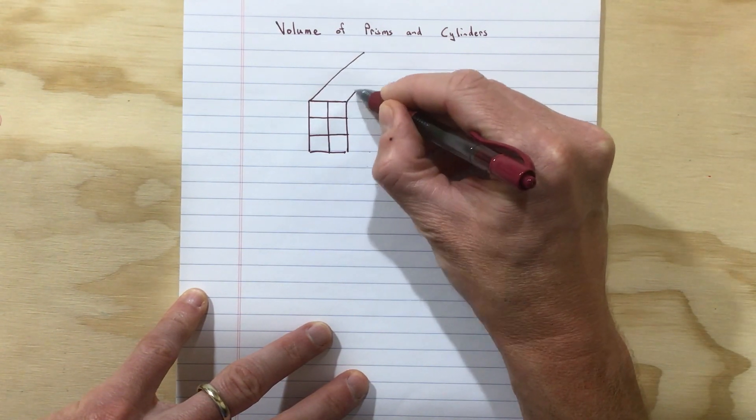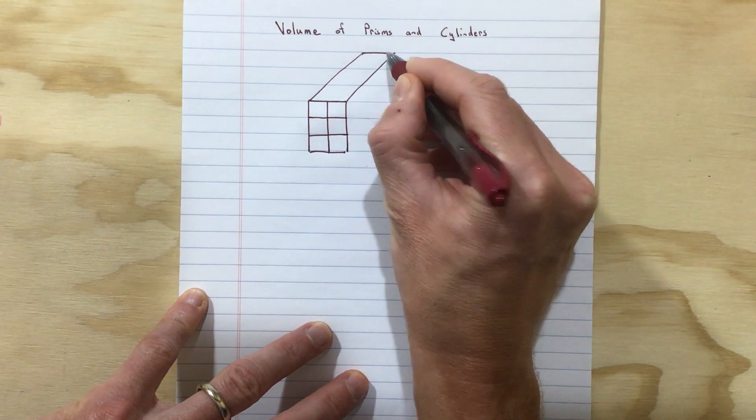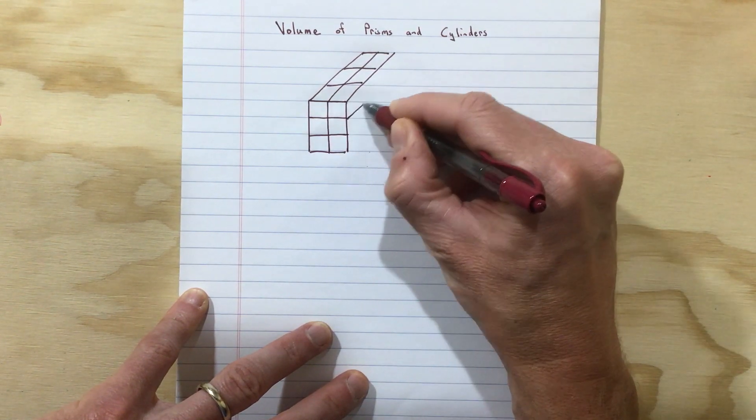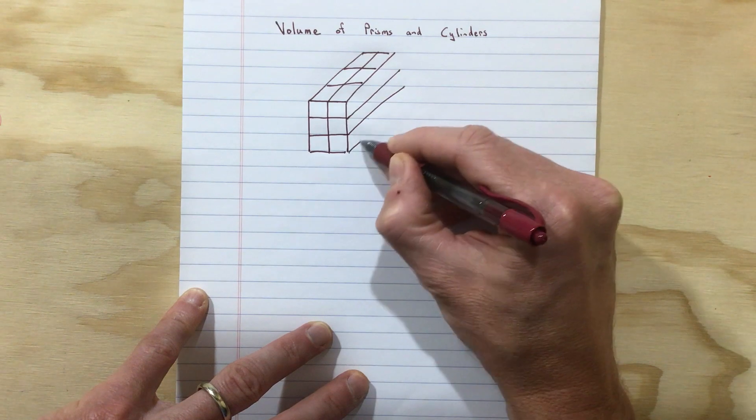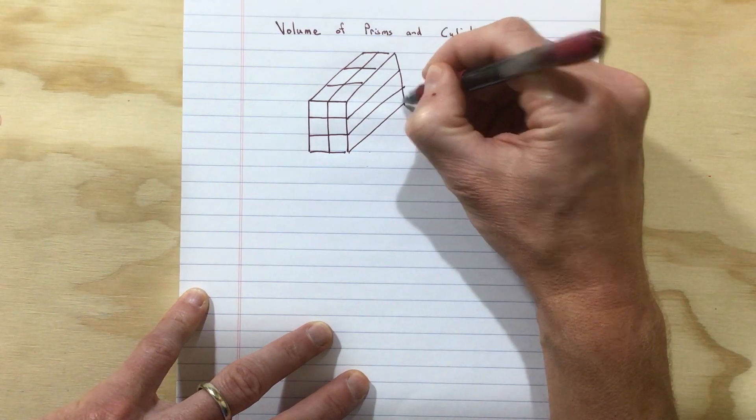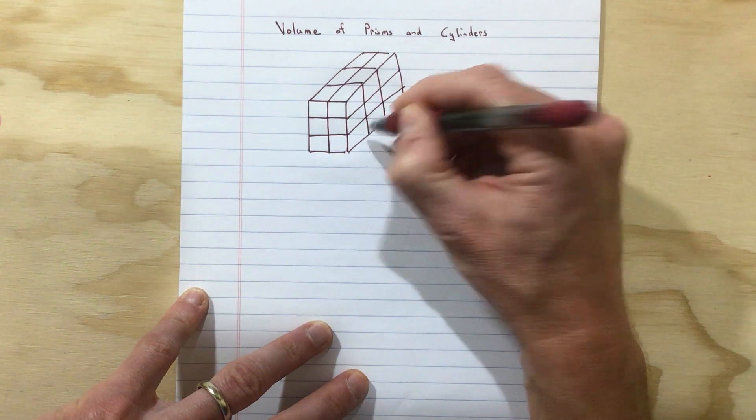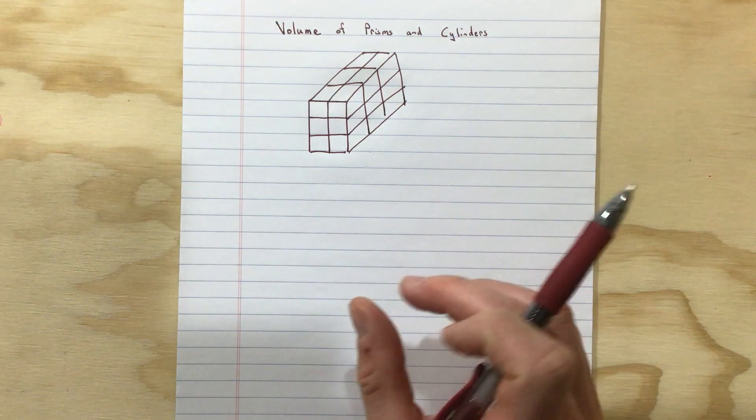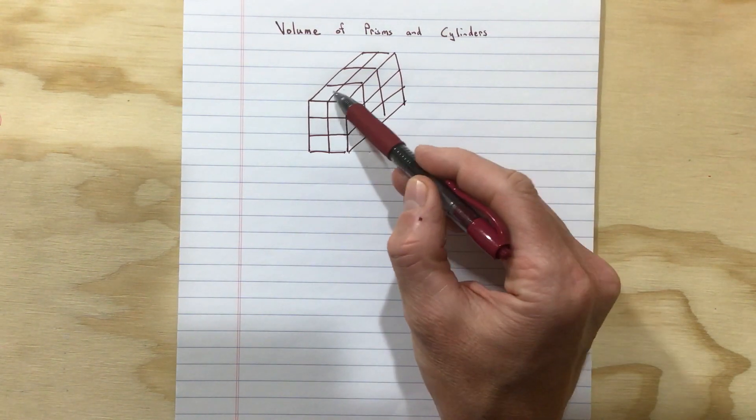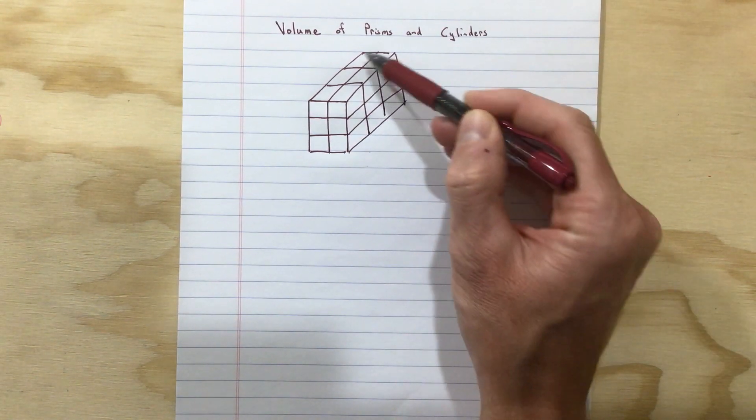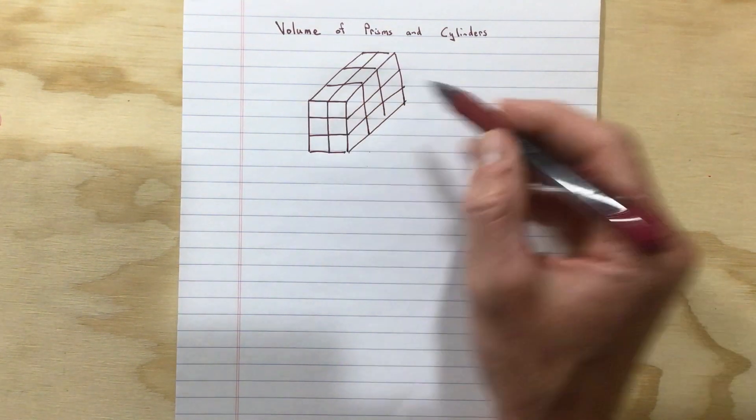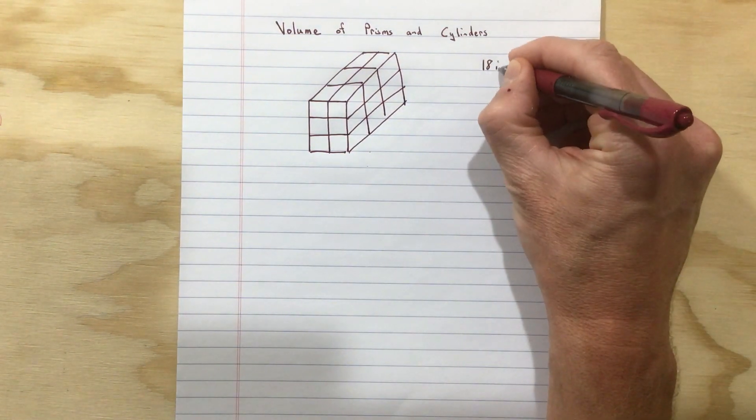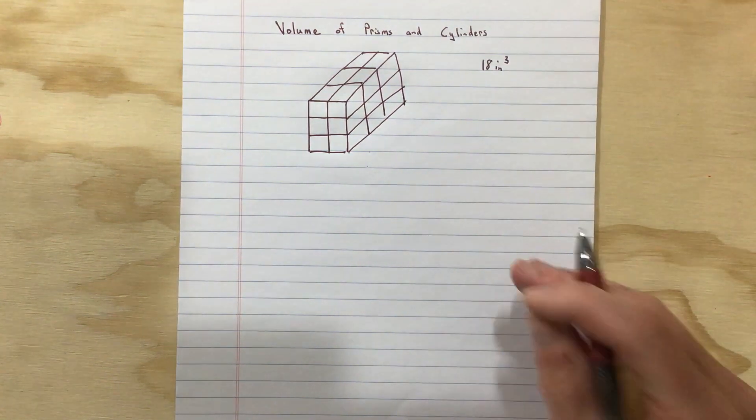Let's extend that maybe three deep. Okay, so let's give it some depth. So what we really now have is a rectangular prism. Hopefully you can kind of see all the cubes. There are six cubes in this front, six cubes in the middle, and six cubes on the back. So we know there are 18 cubes. Let's say they're all one inch by one inch, which means we have a volume of 18 cubic inches.